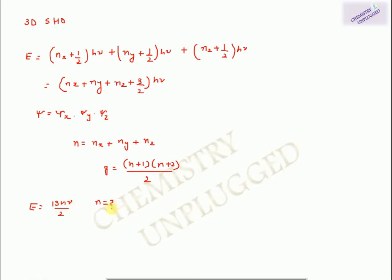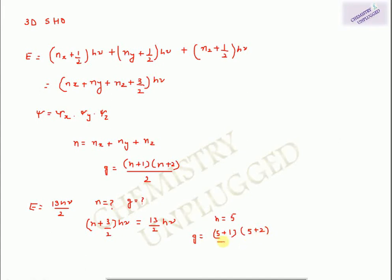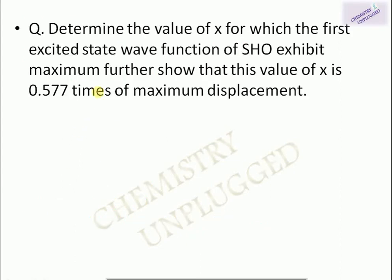For example, if the energy value is (13/2)hν, we compare it with (N + 3/2)hν to find N = 5. Substituting into the degeneracy formula: g = (5+1)(5+2)/2 = 6×7/2 = 21. The degeneracy value can be very large, so simply place the value of N and calculate g.